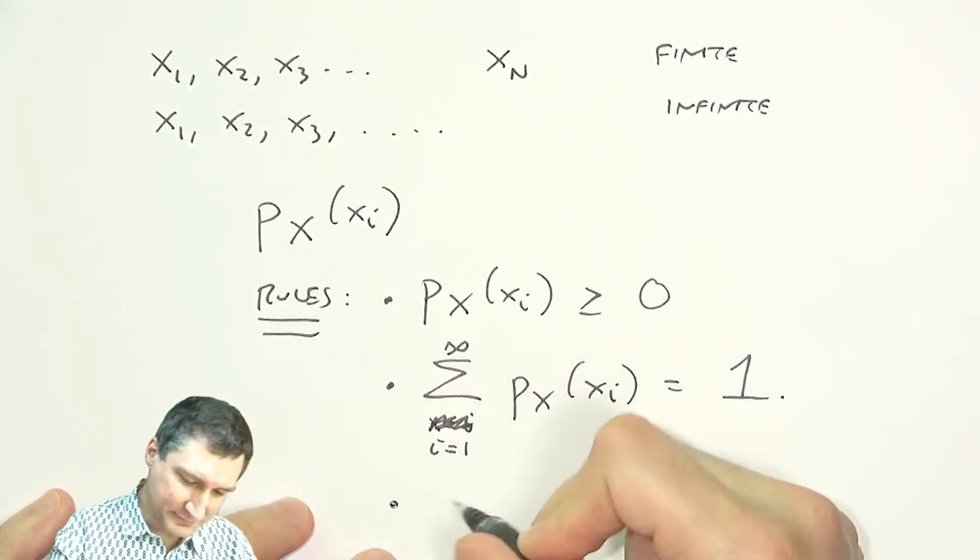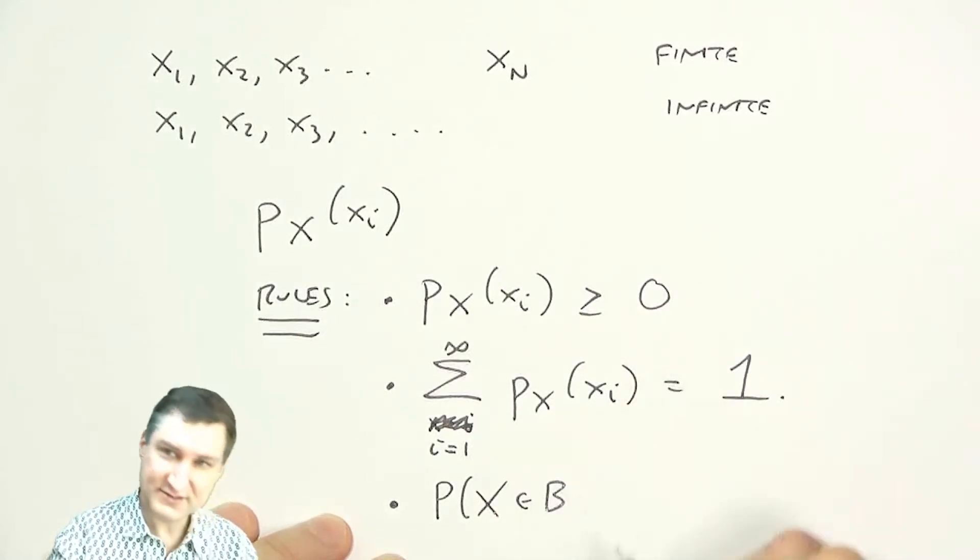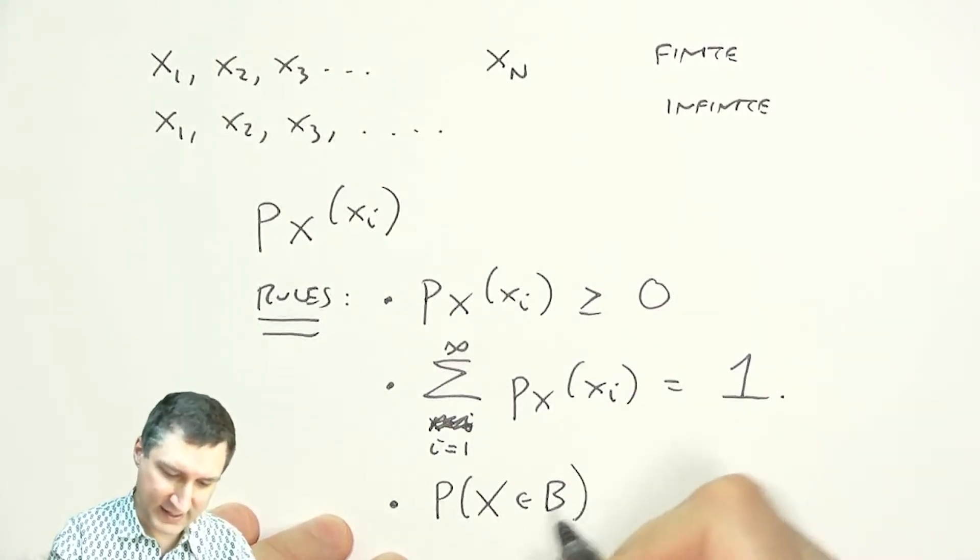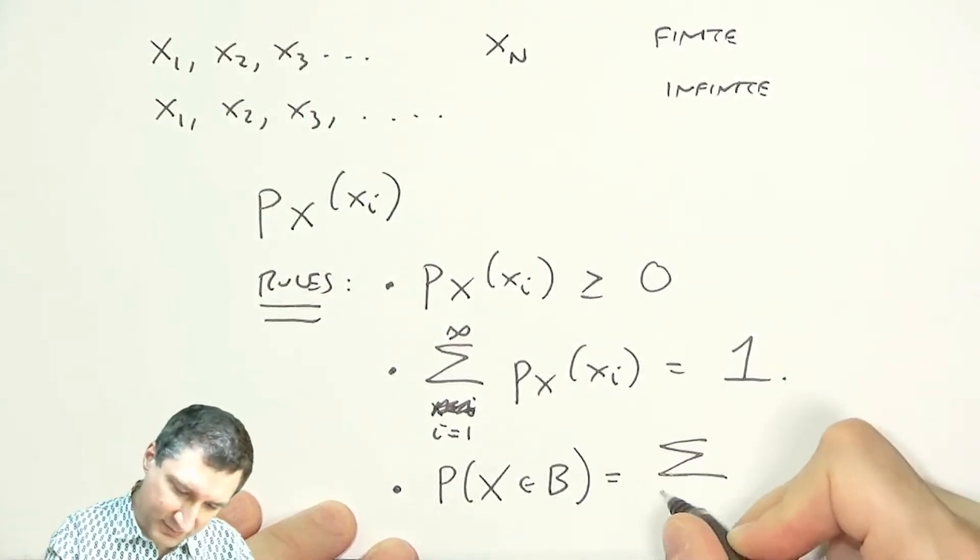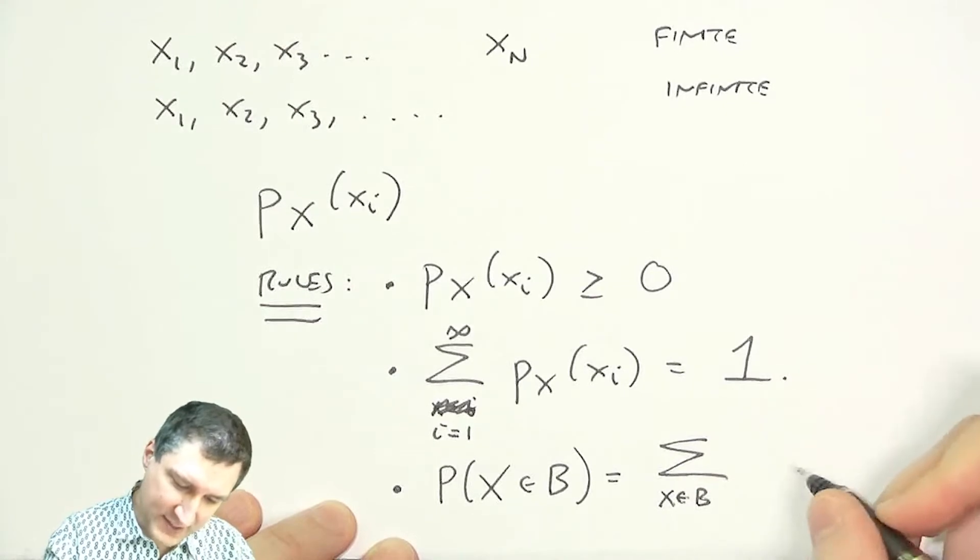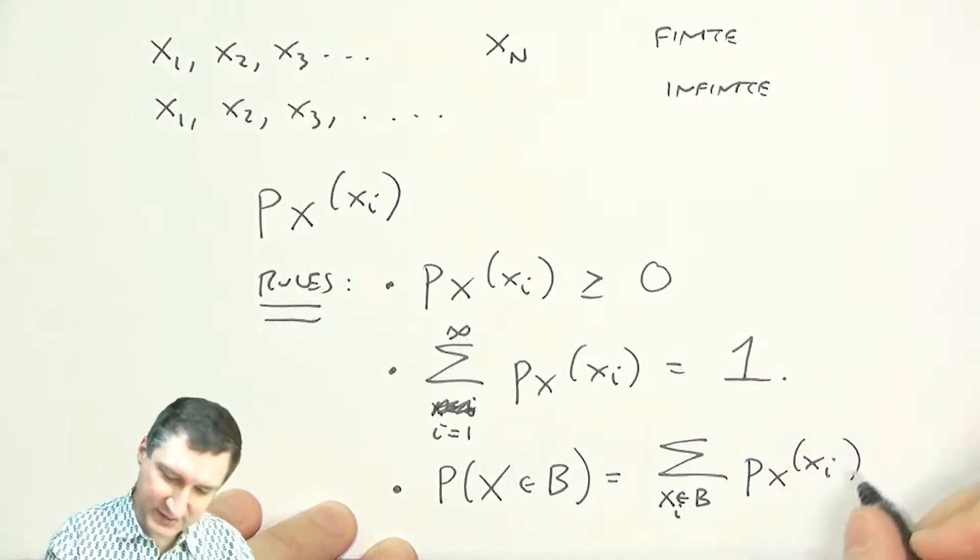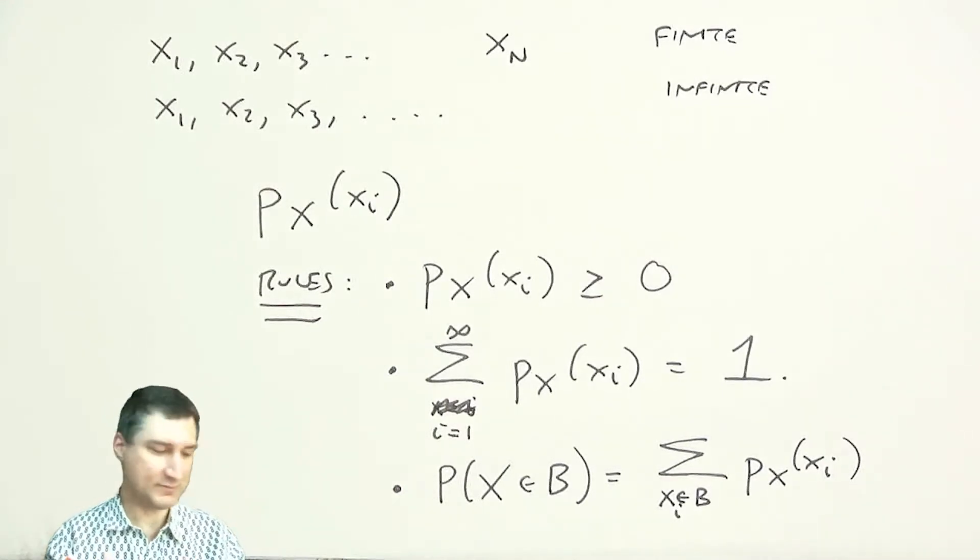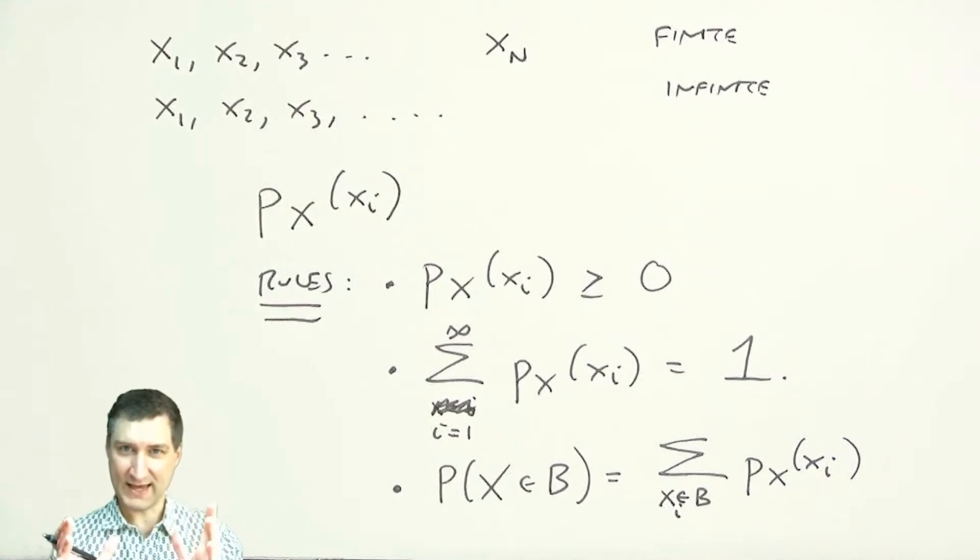And then, this is just a way of saying the probability that X is in some set B, and again, this is like an interval of real numbers, that's just equal to the sum of looking at the outcomes that are in B times the individual probabilities of each of those outcomes. So this is just saying that if I want to find out what's the probability of a set of numbers in the real line, I look at all the discrete outcomes that lie in that set, and I add up those corresponding probabilities.